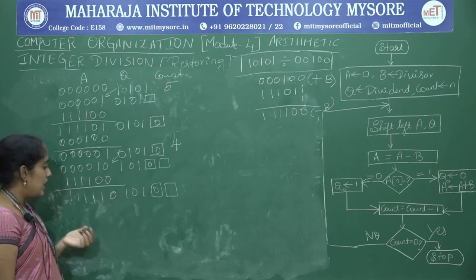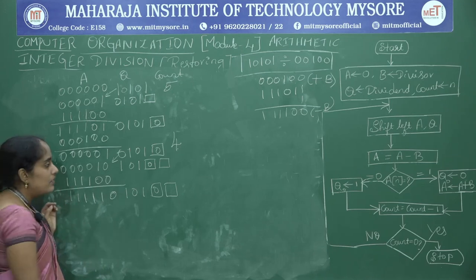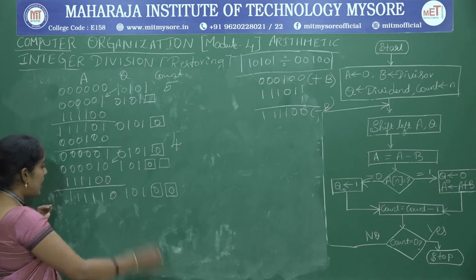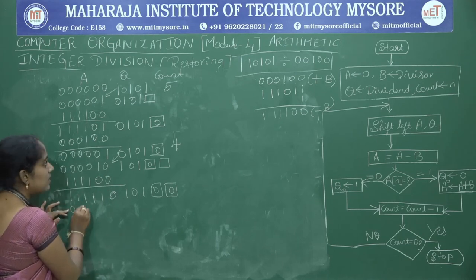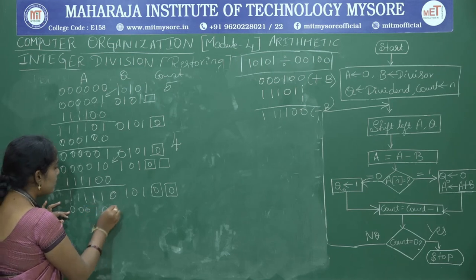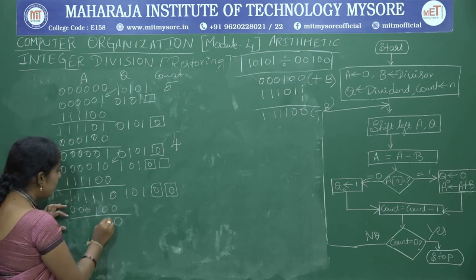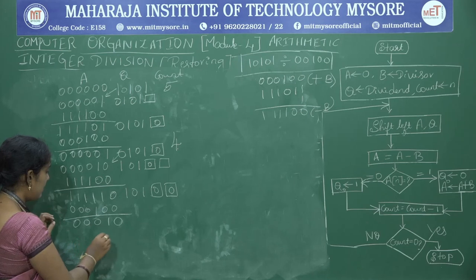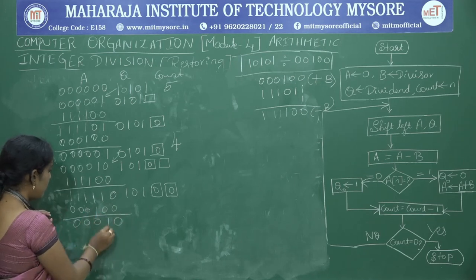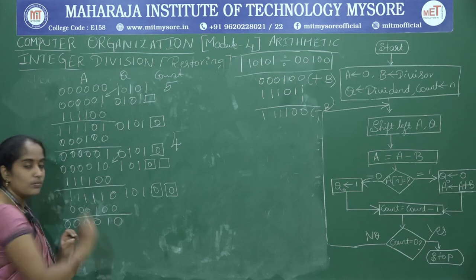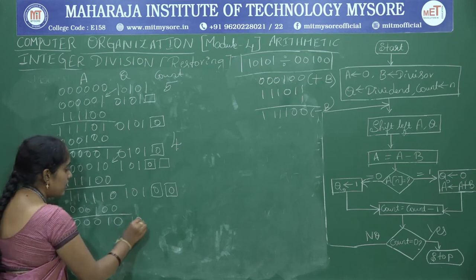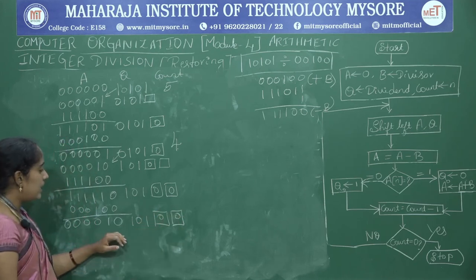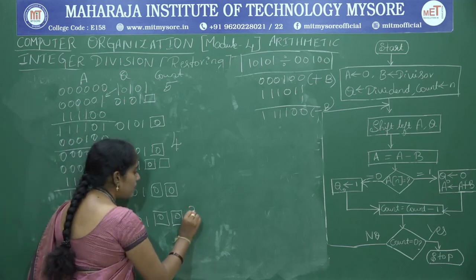Set Q0 to 0. Restore A: A equals A plus B (plus B is 000100). Result is 000010. Q contains 010 with blank. Decrement count: count becomes 3.